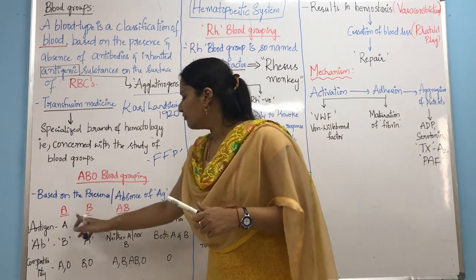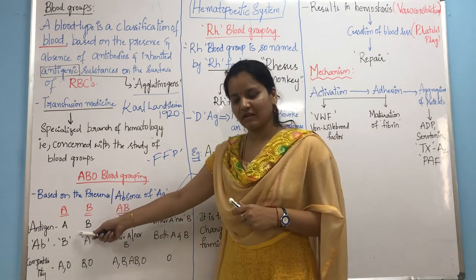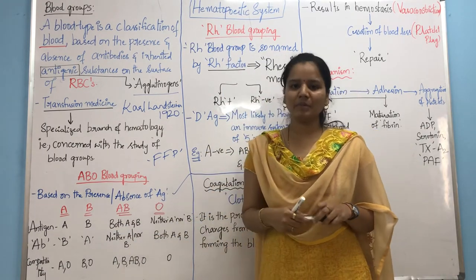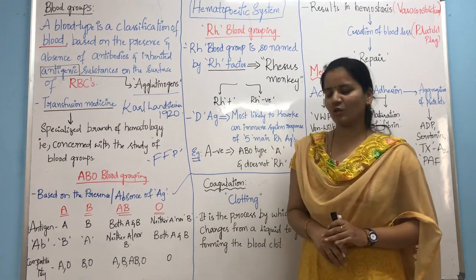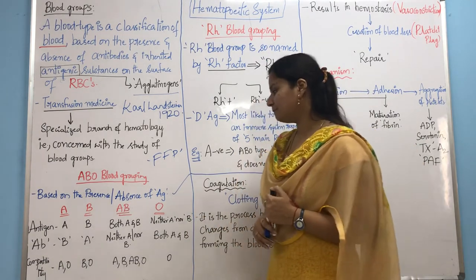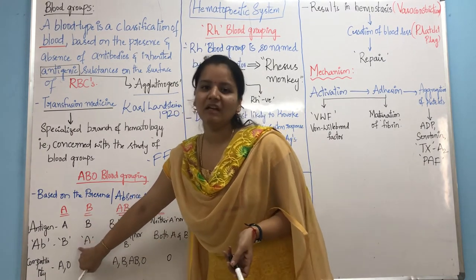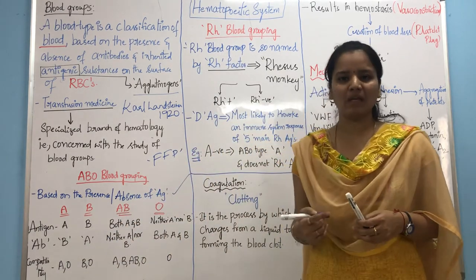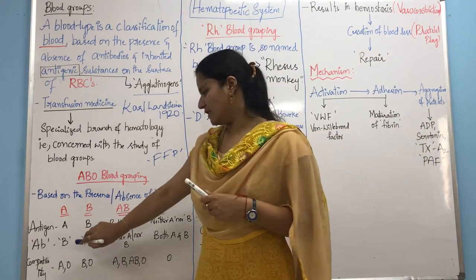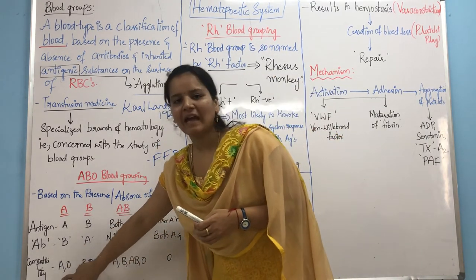Let us see the differences. First, based on antigen: in A blood group, A antigen is present; in B, B antigen is present on the surface of the RBCs; in AB blood group, both A antigen and B antigen are present; whereas in O blood group, neither A nor B antigen are present. In A blood group, as there is A antigen, there will obviously be an antibody of B, also called anti-B antibodies. So a patient with A blood group carries anti-B antibodies, and the compatible blood groups for transfusion are A and O.